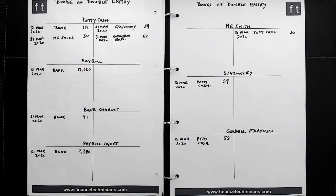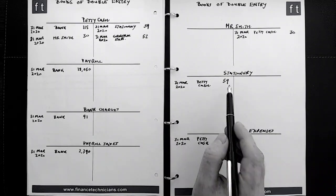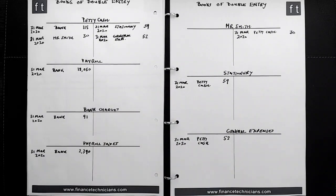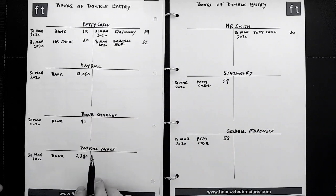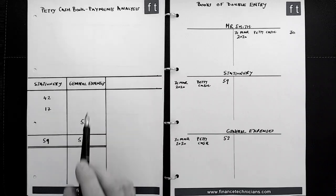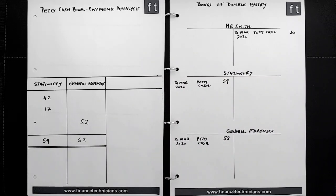We now have the debit and credit transactions for 52, and the debit and credit transactions for 59. Looking back at the petty cash book payments analysis, we can see that both the 59 and the 52 have been posted to the relevant accounts. That concludes this tutorial — thank you for watching.